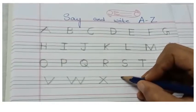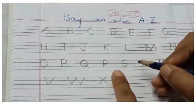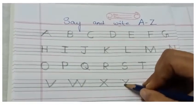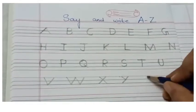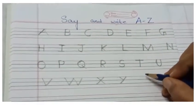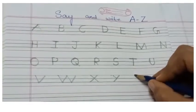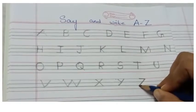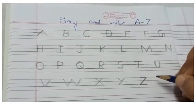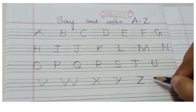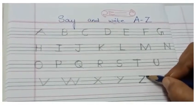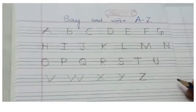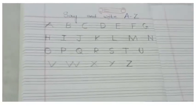Now comes letter Y. One finger space and here we are going to write capital letter Y — slanting line, slanting line, capital letter Y. Now last, one finger space and we are going to write capital letter Z — sleeping line, slanting line, sleeping line, capital letter Z. So this is how we write letters A to Z.